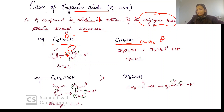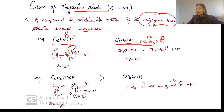Now look at ethanol — we have CH3CH2O negative. Here there is no resonance. In fact, the ethyl group has a +I (plus inductive) effect, which actually increases the electron density on the oxygen. So ultimately this decreases the acidic character compared to phenol.